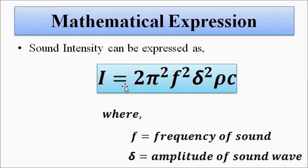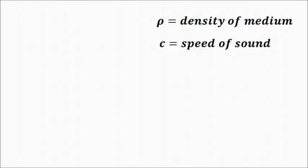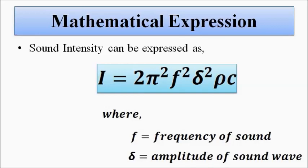The mathematical expression for sound intensity is given by: I = 2π²f²δ²ρc, where f is the frequency of sound, δ (delta) is the amplitude of the sound wave, ρ (rho) is the density of the medium through which the sound is moving, and c is the speed of sound in that medium.